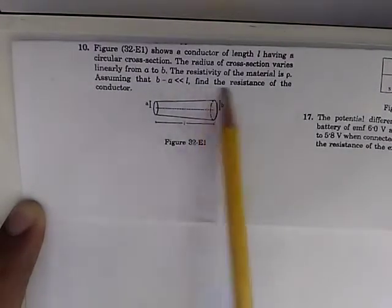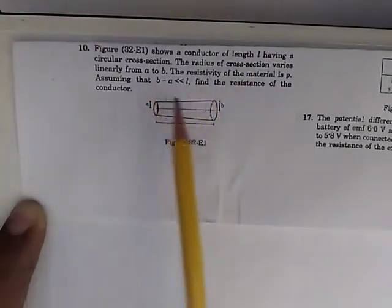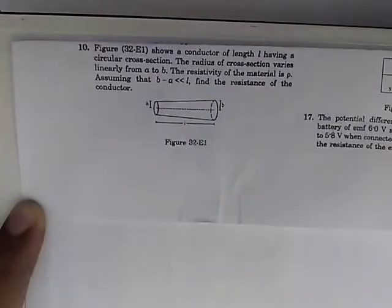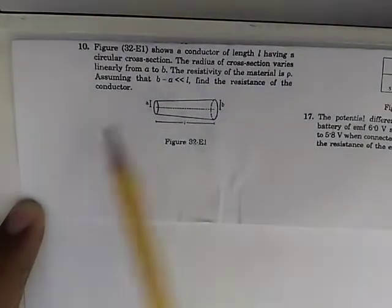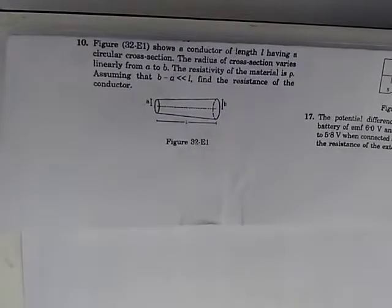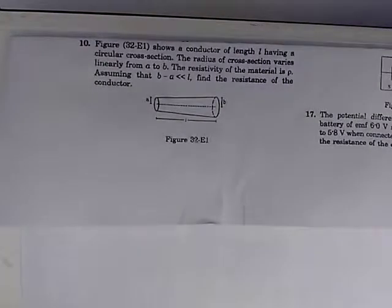We need to find the resistance of this conductor given that its resistivity is ρ. In this kind of variable problem, we usually need to make use of concepts of calculus, and that's what we're going to do here.